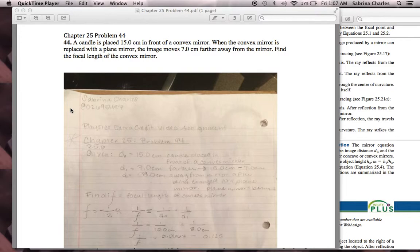a candle is placed 15.0 centimeters in front of a convex mirror. When the convex mirror is replaced with a plain mirror, the image moves 7.0 centimeters farther away from the mirror. Find the focal length of the convex mirror.